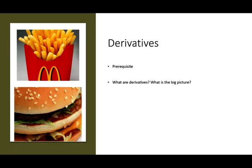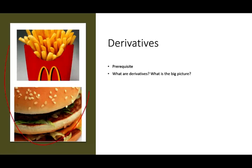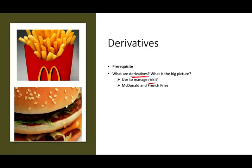So what are derivatives and what is the big picture? Here's the big picture using McDonald's as an example. Derivatives are used to manage risk. The word 'derivatives' means it derives its value from something else, and it's used to manage risk. Let's work through the McDonald's and french fries example. Let's assume per year they would need 1 million tons of potatoes.